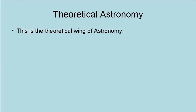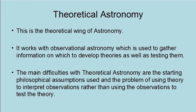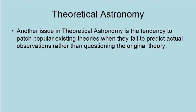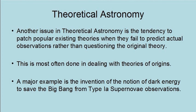Theoretical astronomy is the theoretical wing of astronomy. It works with observational astronomy, which is used to gather information on which to develop theories, as well as testing them. The main difficulties with theoretical astronomy are the starting philosophical assumptions used, and the problem of using theory to interpret observation rather than using observations to test the theory. Another issue is the tendency to patch popular existing theories when they fail to predict actual observations, rather than questioning the original theory. This is most often done in dealing with theories of origins.